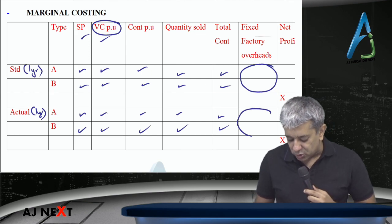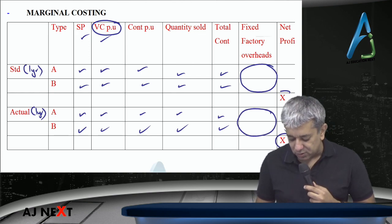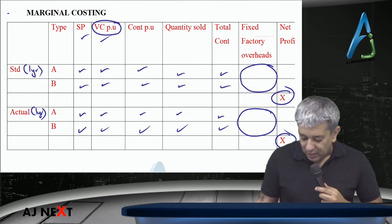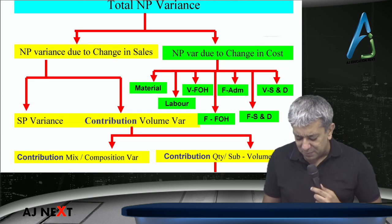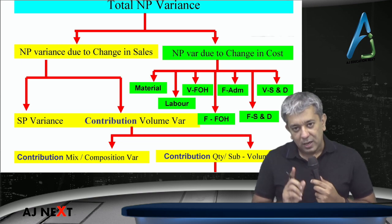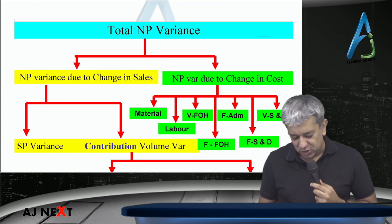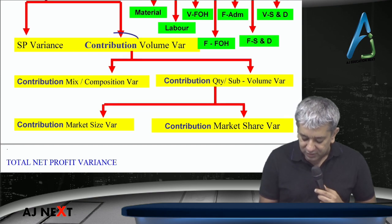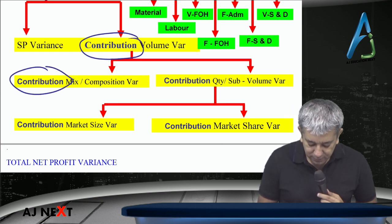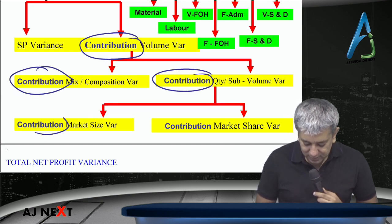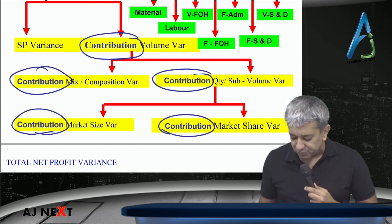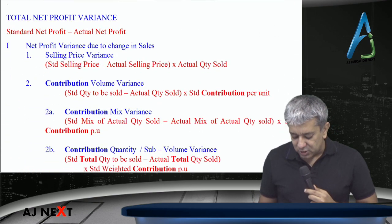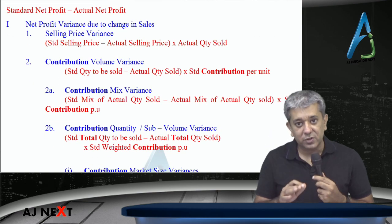Same thing for actual — what the actual fixed factory overheads were, then you get your actual profit. Once this work is done, look at this: the new chart is basically the same. Every place where the word 'profit' was there, I have now replaced it with 'contribution'. That's it — no other change. And whatever changes come anywhere are because of this substitution.